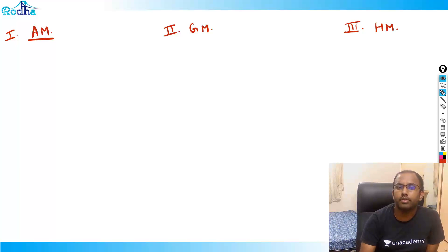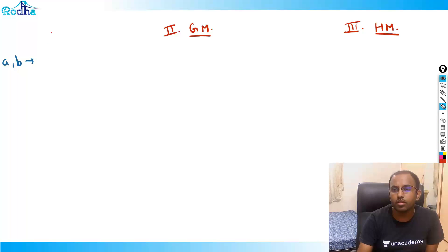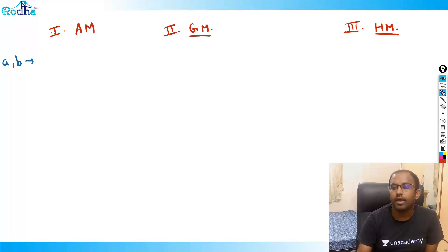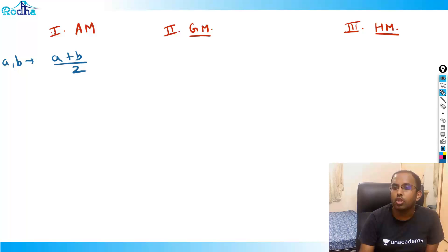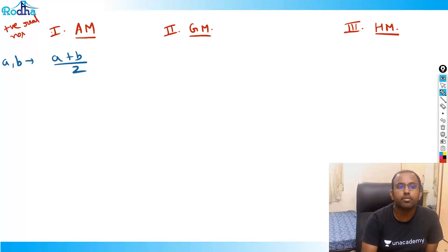AM, GM, and HM are only applicable for positive real numbers. AM is simple average — for any two numbers A and B, their AM is A plus B divided by 2. What is GM? If there are two numbers A and B, their GM is root of AB, that is AB to the power 1 by 2. We have also done a few questions on AM, GM, HM in our algebra practice session.